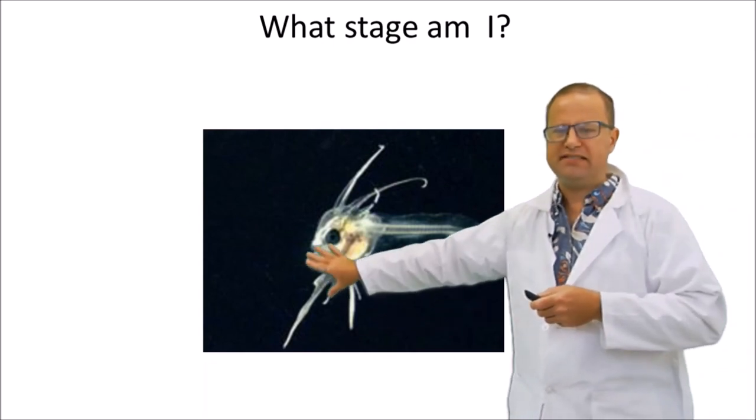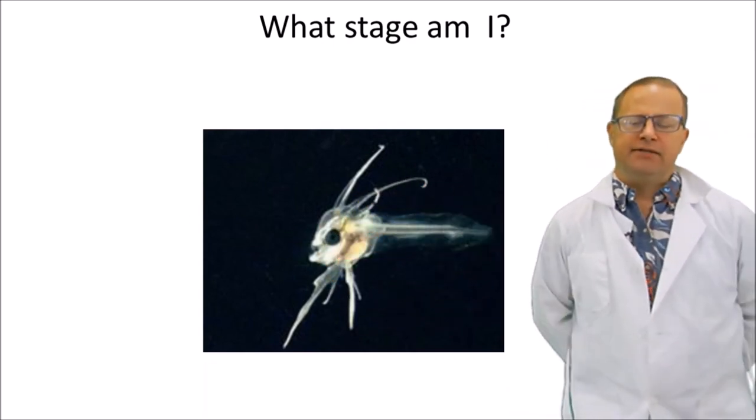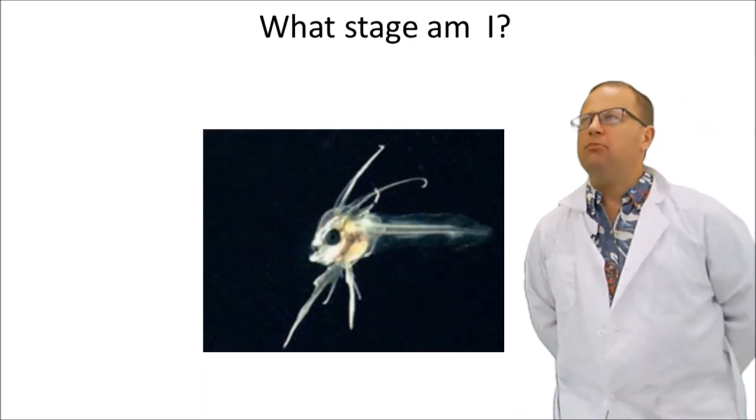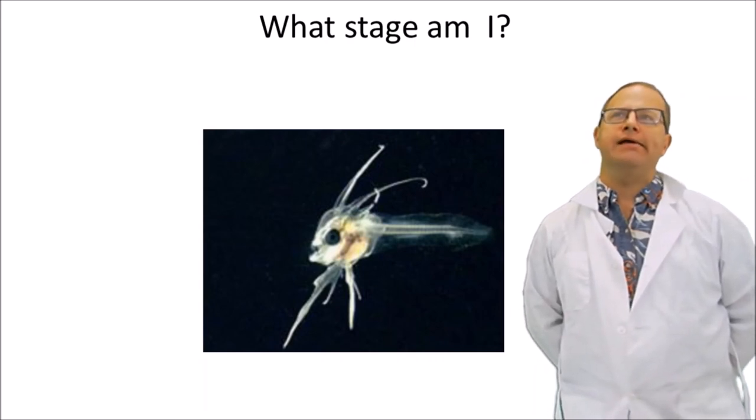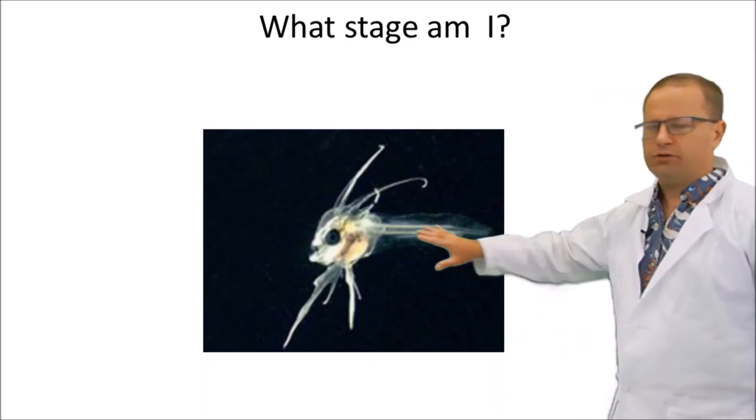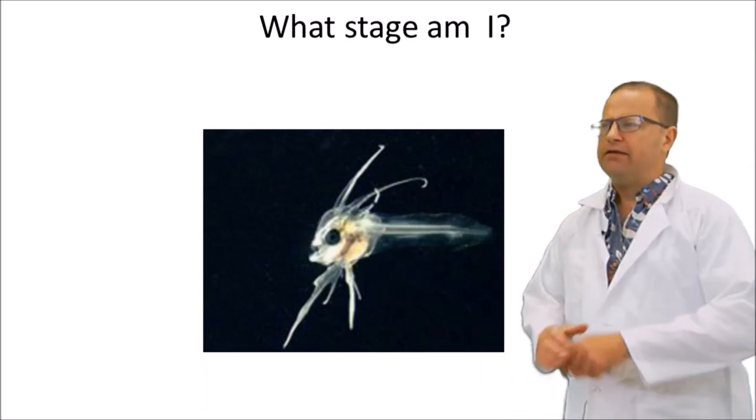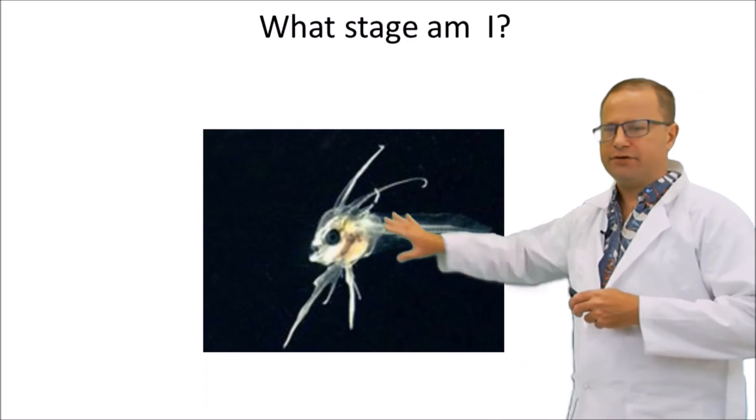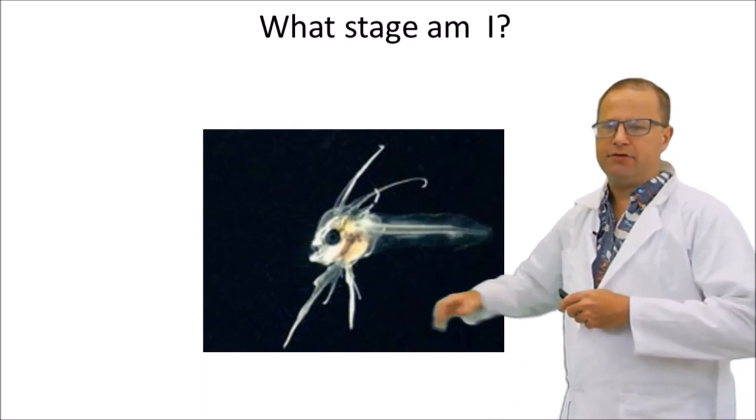Okay, then there's a crazy thing like this. So what stage do you think this guy would be? It's probably going to be a late larva or a post-yolk sac larva. So if we're using the freshwater terminology, we'd call it a fry, right? So it's got these big long spines but no yolk sac in there. And again, the spines are there to deter predation.